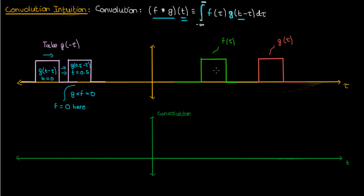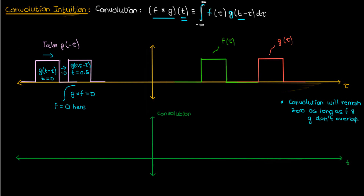Similarly, the box part of f is hovering over the zero part of g, so multiplying g and f when they're so far apart gives 0, and the integral of 0 from negative infinity to infinity is 0. This means the convolution of f and g will remain 0 as long as g and f don't overlap their non-zero portions — from time 0 until g just starts touching f, because the product of f and g is 0 when they're not touching, and so the definite integral of that product is also 0.